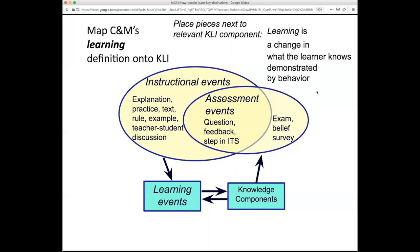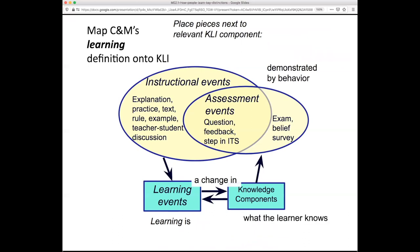If you want to engage in active learning yourself, try this: think about where these four pieces go. 'Learning is' — that's learning events. 'A change in' — that's the arrow suggesting a change in what learners know. 'Demonstrated by behavior' shows up in these assessment events: in what students do when they answer questions, when they do a step in an intelligent tutoring system, when they take an exam, or when we're trying to see if there are changes in their knowledge components around beliefs, motivations, or dispositions.